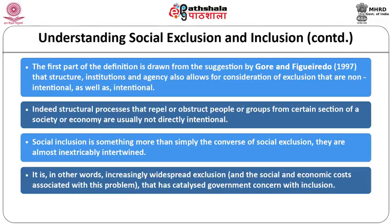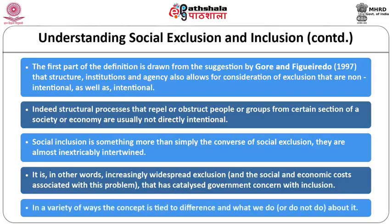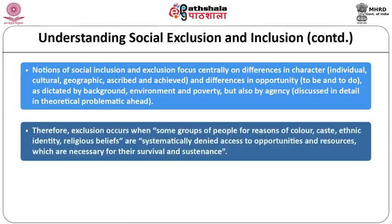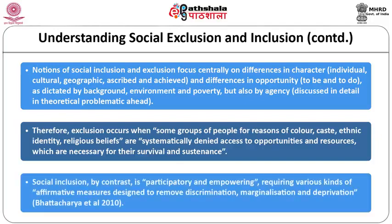Social inclusion is something more than simply the converse of social exclusion — they are almost inextricably intertwined. It is widespread exclusion and its social and economic costs that have catalyzed government concern with inclusion. Notions of social inclusion and exclusion focus centrally on differences in character — individual, cultural, geographic, ascribed and achieved — and differences in opportunity as dictated by background, environment, poverty and agency. Exclusion occurs when some groups, for reasons of colour, caste, ethnic identity or religious beliefs, are systematically denied access to opportunities and resources necessary for survival. Social inclusion, by contrast, is participatory and empowering, requiring affirmative measures to remove discrimination, marginalization and deprivation.